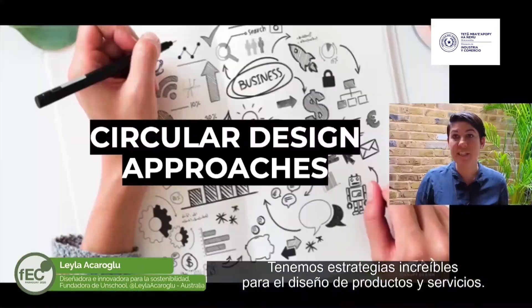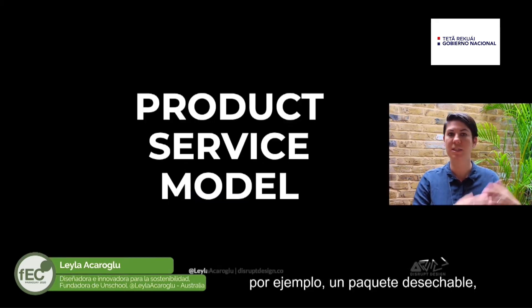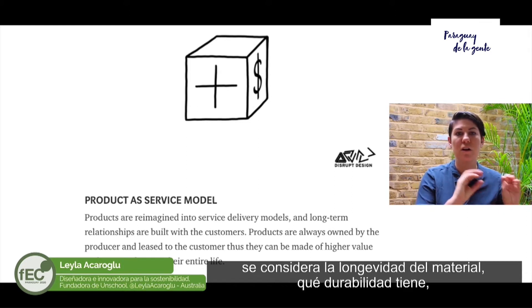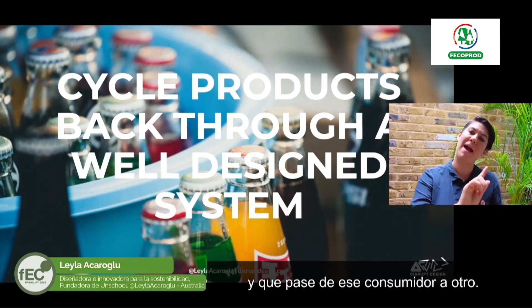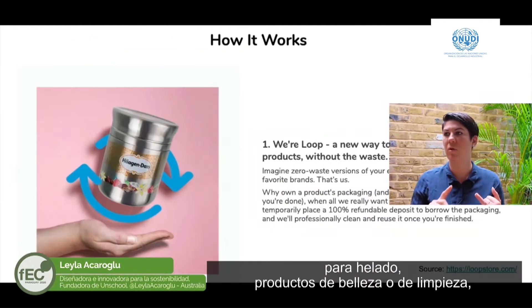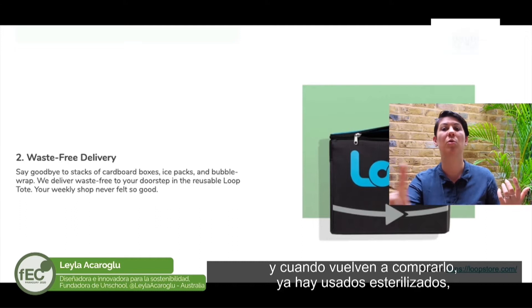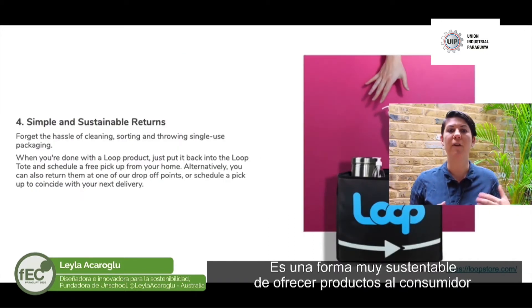Let's look at some of the circular design approaches. We have incredible strategies that apply to the design of products and services. Things like a product-service system model, which is where you take a product that's currently linear — say a disposable piece of packaging, a coffee cup, or a takeout container — and you design a whole service model around it, considering the longevity of the materials, how durable they are, and you design the whole system of taking it back, washing it, sterilizing it, getting it back out to the market. An example is Loop, now in the US and coming to Europe, where highly durable containers for ice cream, body products, or cleaning products are offered via subscription. Once finished, customers put them back in a box; when they get their new order, the old ones are picked up, sterilized, washed, and sent back to manufacturers and then back to the customer. It's one big loop — a truly sustainable way of offering products without giving in to the disposability problem.